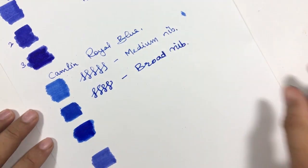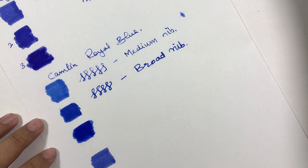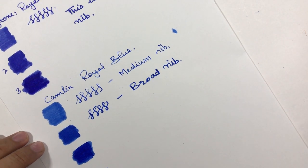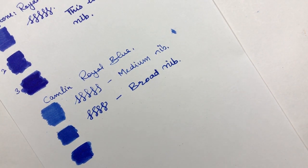Here we have Camlin and third pass. Then we have the third pass for Parker. Let me write something with Parker now.